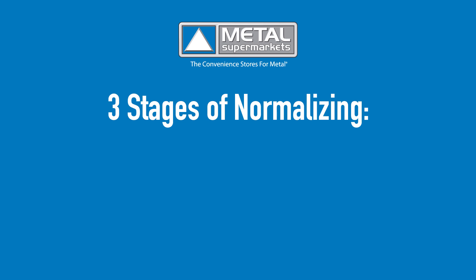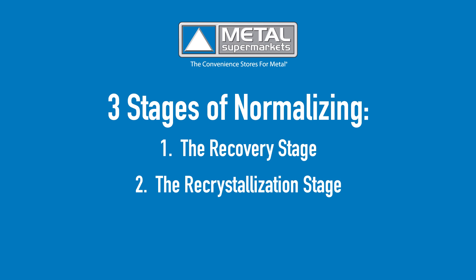There are three stages to a normalizing process. The recovery stage, where a furnace is used to raise the metal's temperature. The recrystallization stage, where the metal is heated above its recrystallization temperature but below its melting temperature, which causes new grains without pre-existing stresses to form. And the grain growth stage, when new grains fully develop.